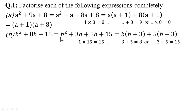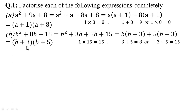We can write: b² + 3b + 5b + 15. Taking common from first two terms: b(b + 3). In the last two terms, 5 and 15 are divisible by 5, so 5(b + 3). Since (b + 3) is common in both terms, the final answer is (b + 3)(b + 5).